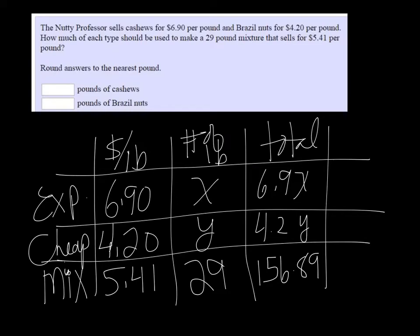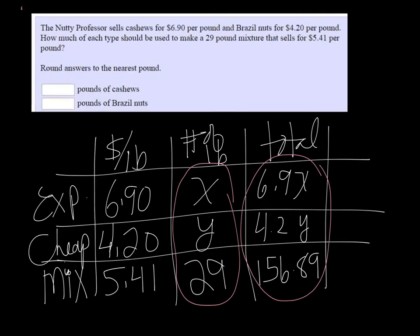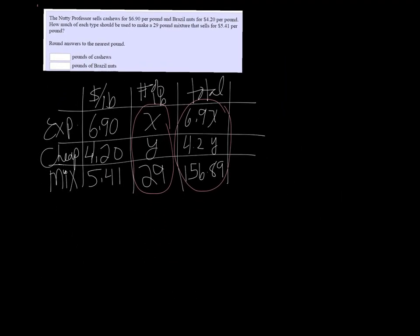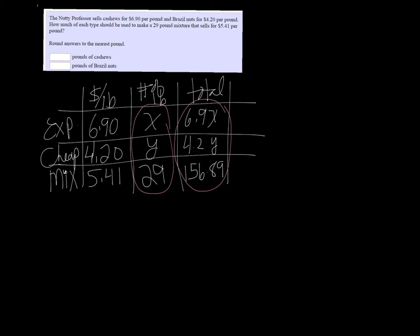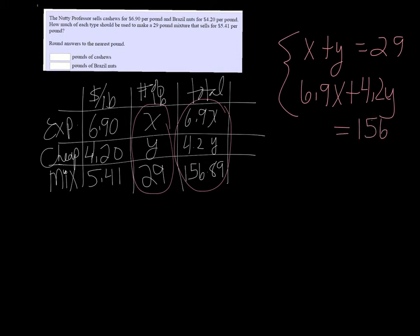So now I have enough with these two columns that I can make a system of equations, a 2x2 system. So that'll look like X plus Y equals 29, and 6.9X plus 4.2Y equals 156.89.